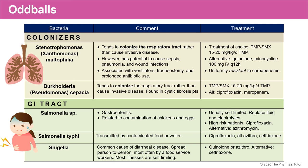The second group of oddball bacteria occur in the GI tract — Salmonella and Shigella. Salmonella species cause gastroenteritis related to contamination of chickens and eggs; this is usually self-limiting and treated by replacing fluids and electrolytes. However, in high-risk immunocompromised patients, we might use ciprofloxacin or azithromycin. Salmonella typhi is transmitted by contaminated food or water and treated similarly with cipro or azithromycin. Shigella is a common cause of diarrheal disease spread person to person, most often by food service workers. Most illnesses are self-limiting, but if treatment is needed in high-risk patients, quinolones or azithromycin can be used.